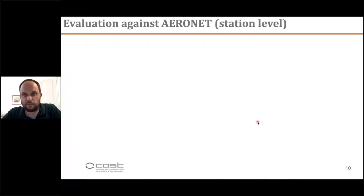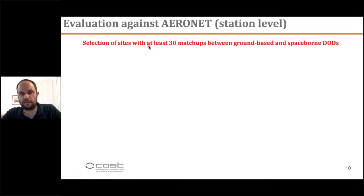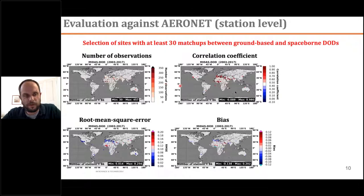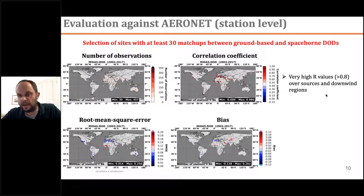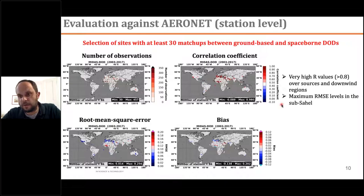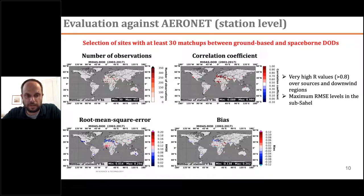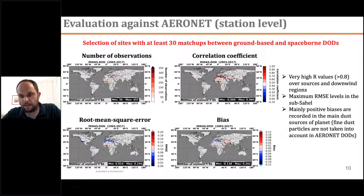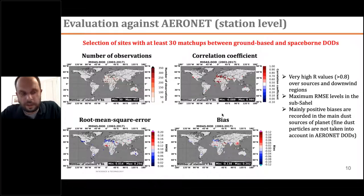More than 400 stations satisfy the collocation criteria. The global scatter plots show very good agreement; MIDAS slightly overestimates dust optical depth with respect to AERONET, partly because fine dust particles are ignored in ground-based observations. Station-level analysis — requiring at least 30 matchups — shows very high correlation and R² values over sources and downwind regions. Maximum R² levels are recorded in the sub-Sahel, where biomass burning particles mix with Saharan dust transported under harmattan winds. Positive biases in main dust sources reflect the fine dust particle omission in AERONET DODs.